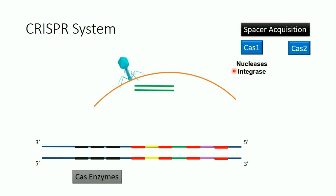Cas1 has nuclease and integrase activity, so it can cut the viral genome and integrate the piece of genome into the spacer DNA. Cas2 is an endoribonuclease, so it can mainly cut RNA. Some bacteriophages have RNA genomes rather than DNA genomes, which is why Cas2 is needed.